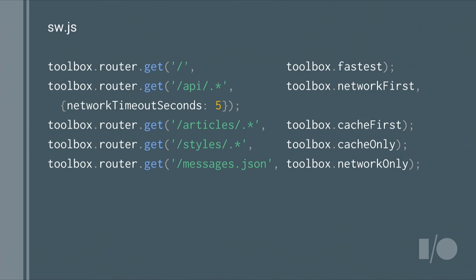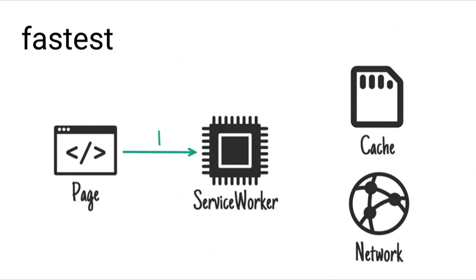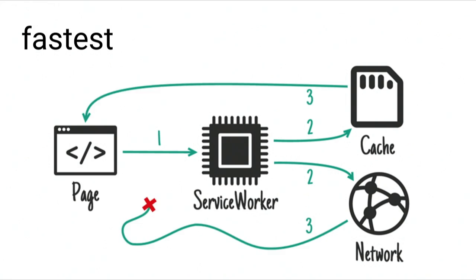The methods we saw — fastest and network-first — are what we call strategies. You need to think carefully about what's the best strategy for each part or each kind of resource on your site. SWToolbox comes with five built-in strategies. Fastest: when a request comes in, we race both the cache and the network, and whichever one comes back first delivers its result to the page. Obviously if the resource is already cached, the cache will probably win, but this way you will also get the network if it's not already cached.